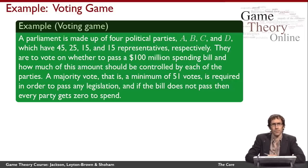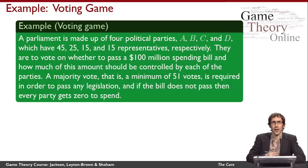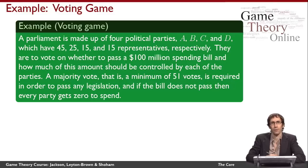Let's begin by looking at an example, which we'll call the voting game. We're going to think about a parliament that consists of four political parties — A, B, C, and D — with 45, 25, 15, and 15 seats respectively. The parties have to vote to decide whether to pass a spending bill of $100 million and how to divide that spending between the parties. It's necessary to get a majority — 51 votes — in order to pass any legislation. If the bill doesn't pass, there'll be no money for any of the parties to spend.